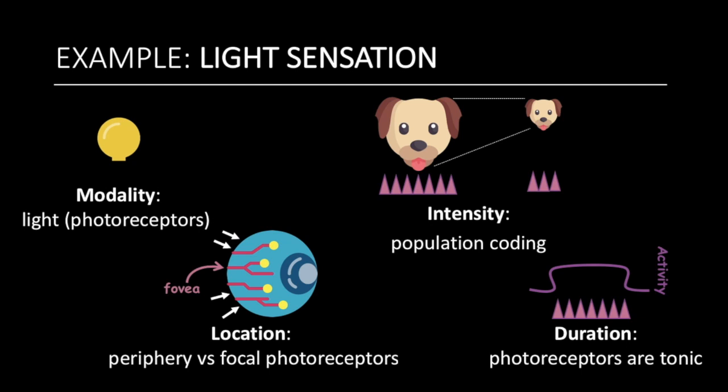In summary, modality, location, intensity, and duration are the four properties of a stimuli, each with their own unique mechanism of coding.